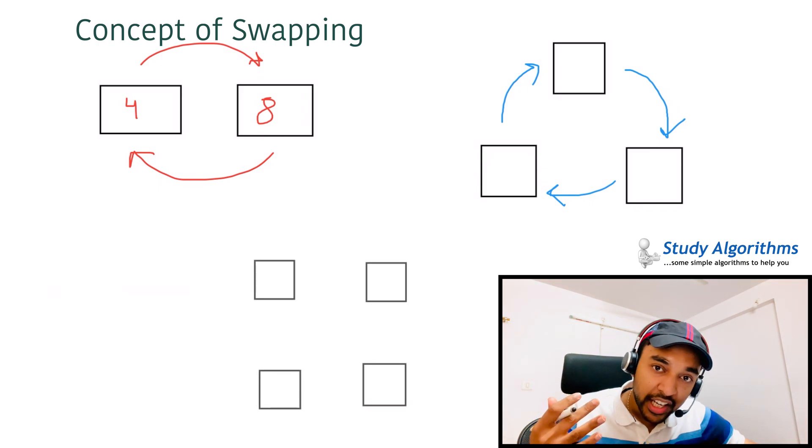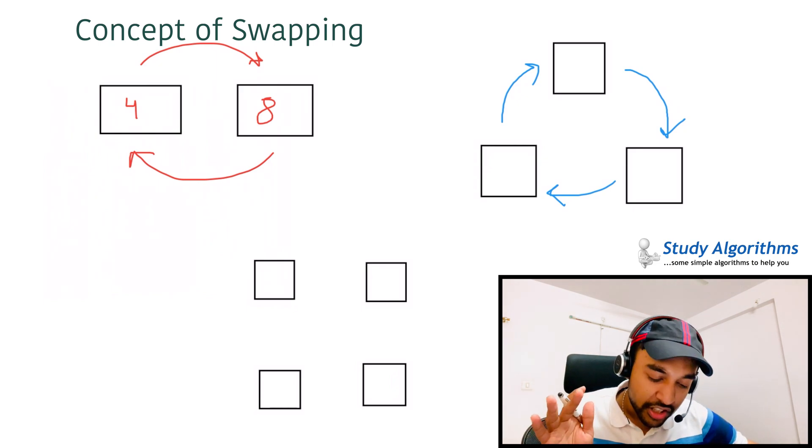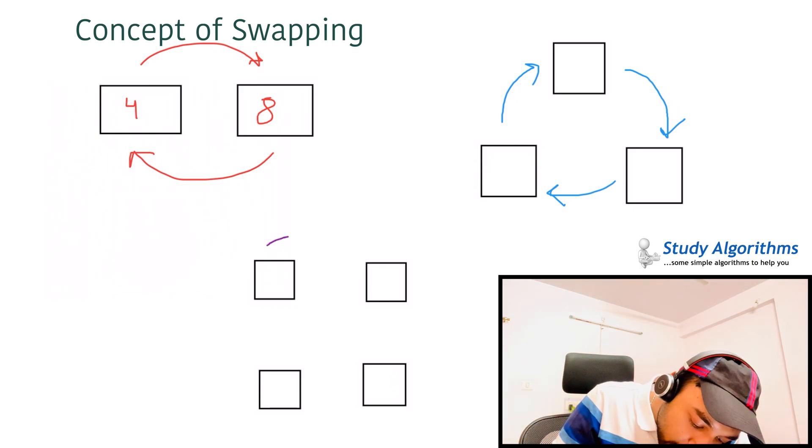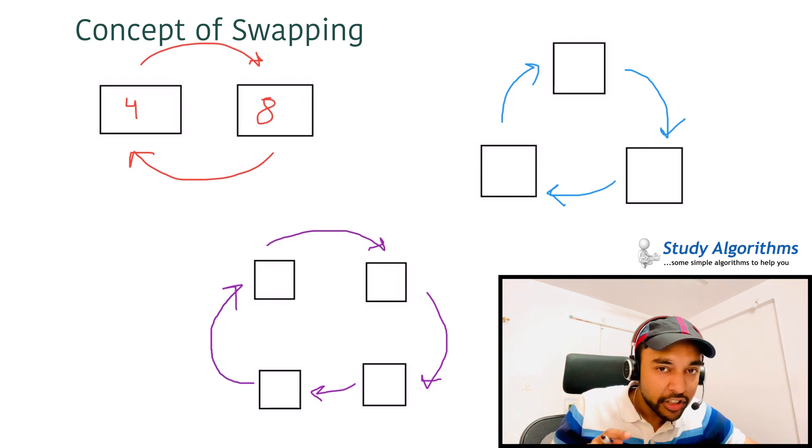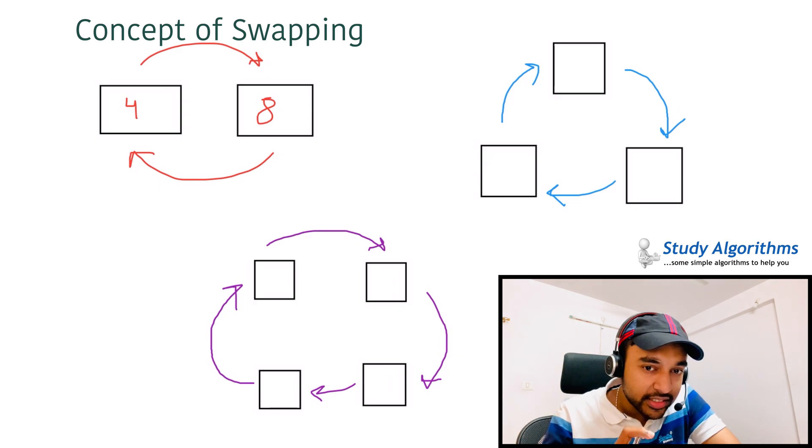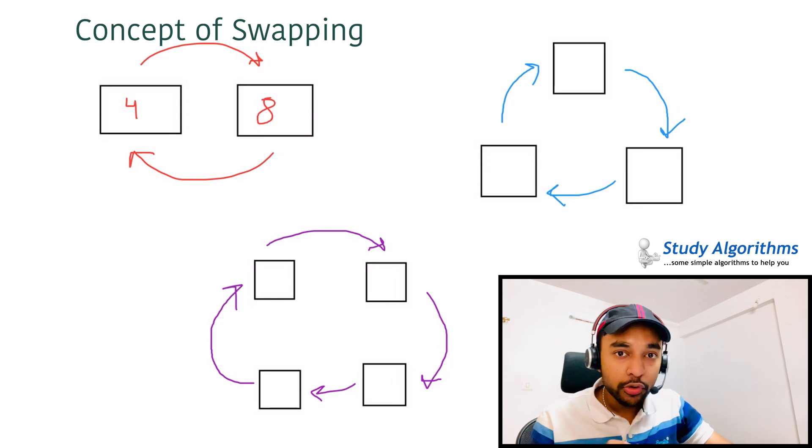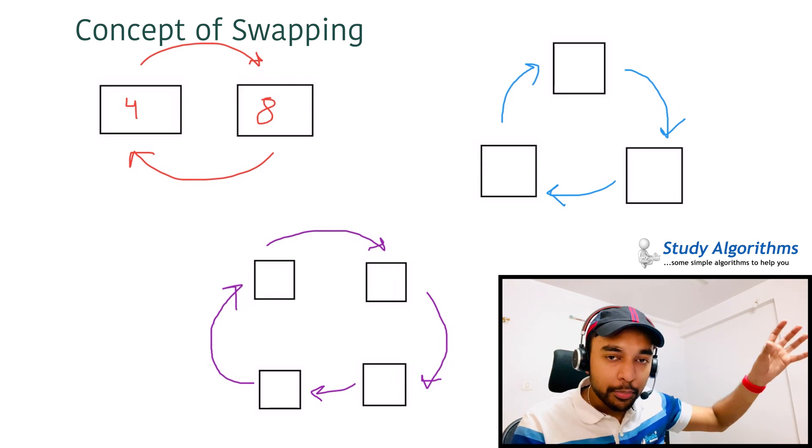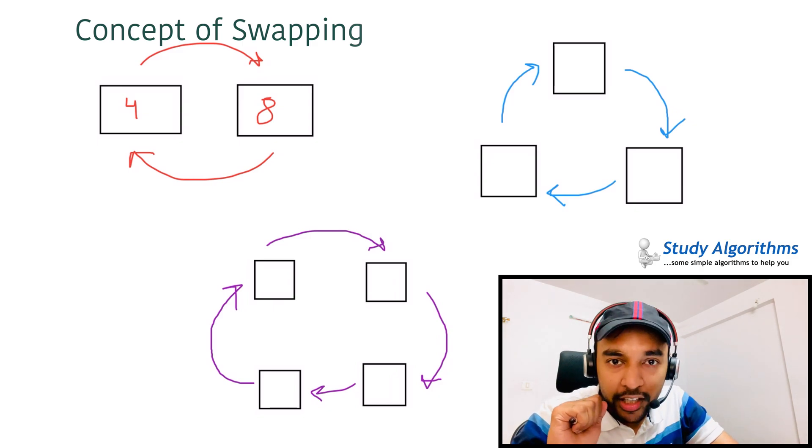Similarly, you can also have a three-way swapping. In a three-way swapping, you have three numbers. This element would go over here. The second element goes at the third place and the third element goes at the first place. Based on this idea, you can also have a four-way swap. That means all the four values are interchanging. The first value goes at the second place, the second value goes at the third place, the third value goes at the fourth place and ultimately, the fourth value goes at the first place. The important thing to note over here is that when you are performing these swaps, you are not taking any extra space.